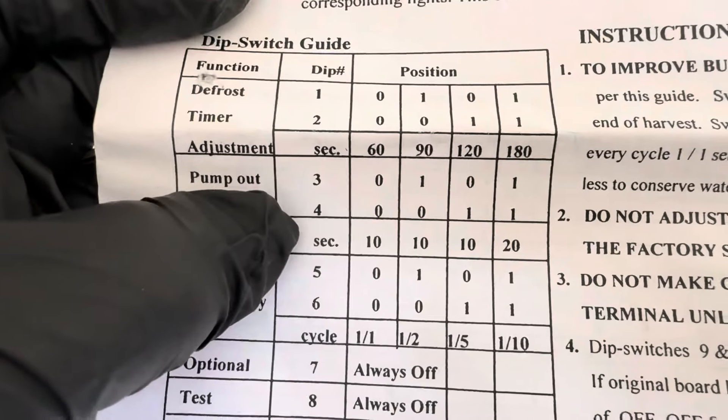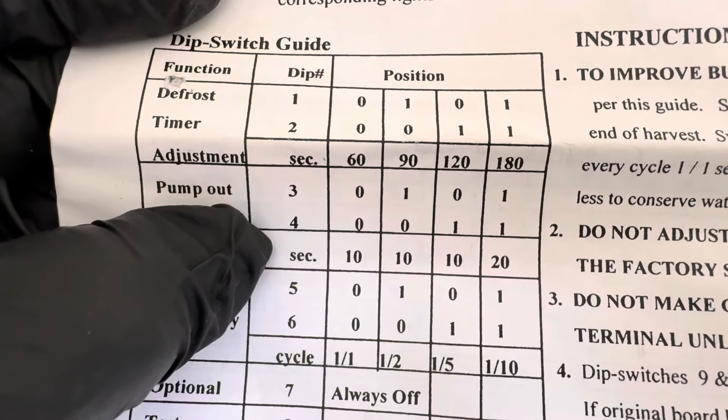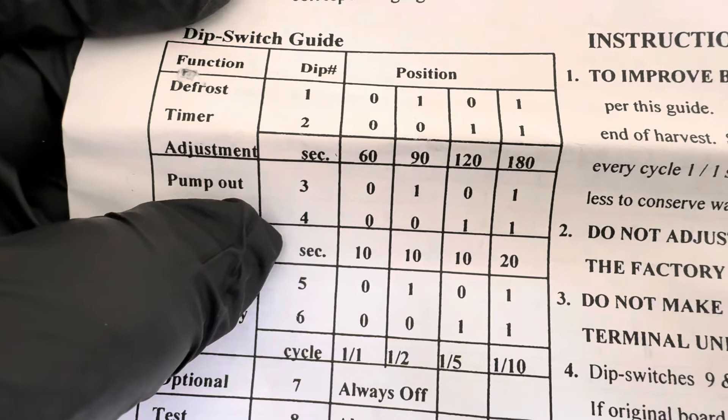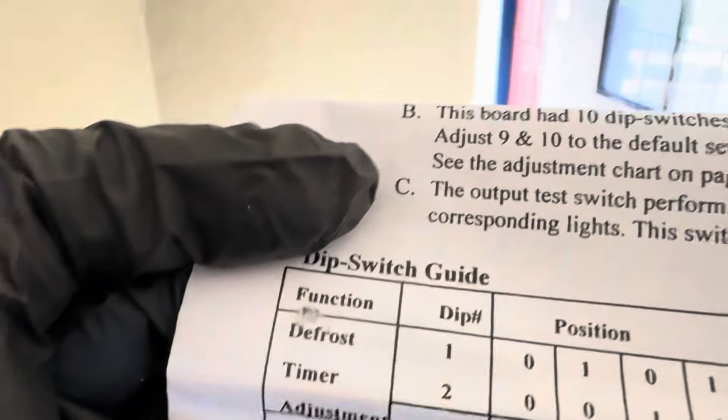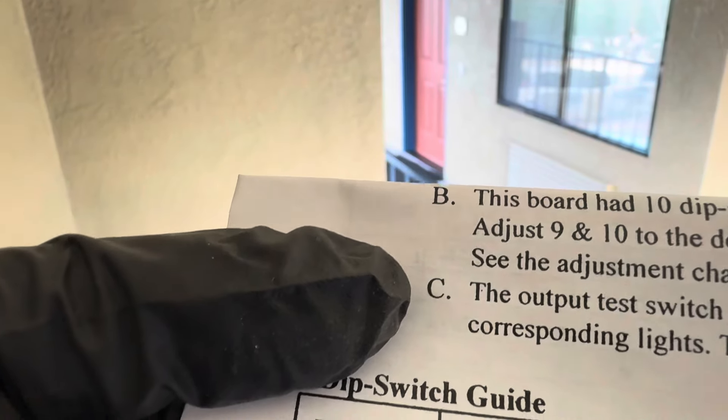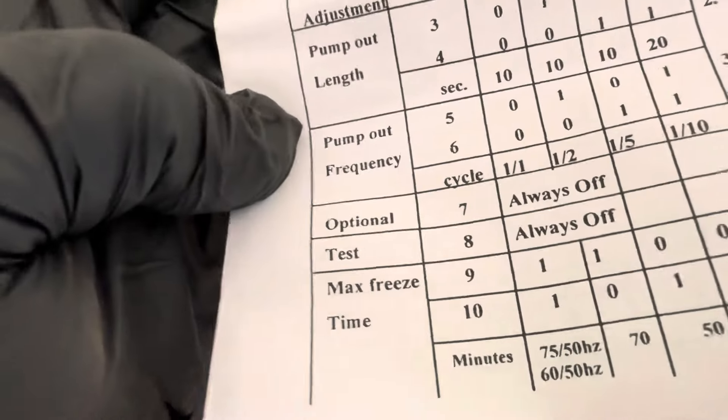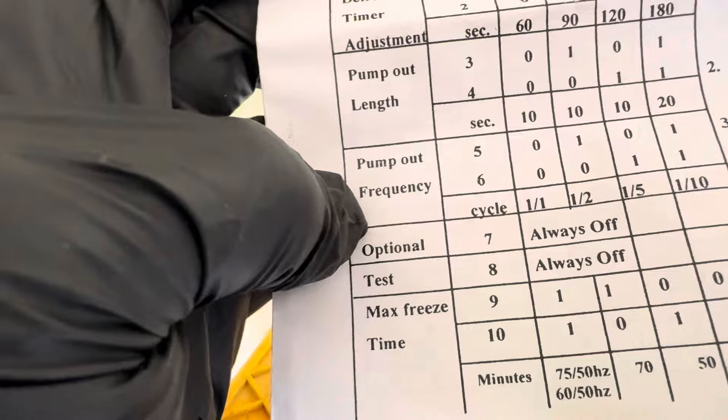Your pump out length, DIP switches 3 and 4. I keep those at zero, I keep those at zero. This one shift with 3 on, 4 off. So that's 10 seconds pump out frequency.